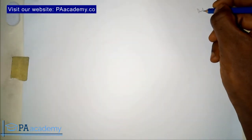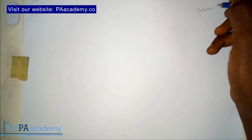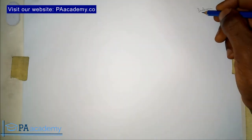Hello everyone and welcome back to PA Academy. This is method 2, the second method I'm going to be taking you through on how to draw a dodecagon — that is a regular polygon with 12 sides.